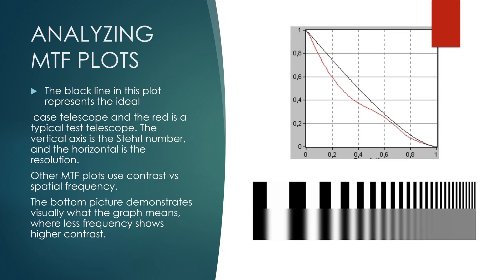If we look back at the same curve right here, as I mentioned the black line here is for a perfect telescope. The red line is for a typical telescope. It won't be perfect. The scales here are for the vertical scale it's strows, the strow number. And the horizontal scale is the resolution.